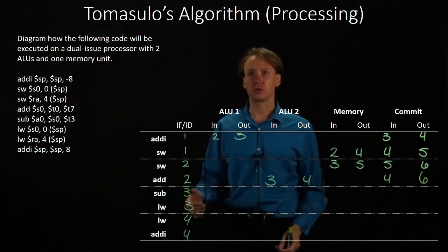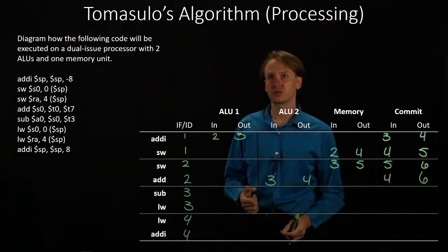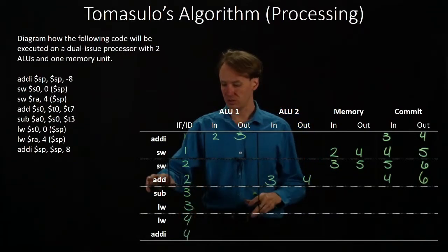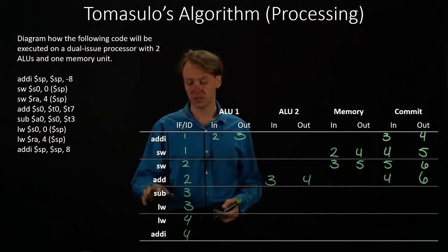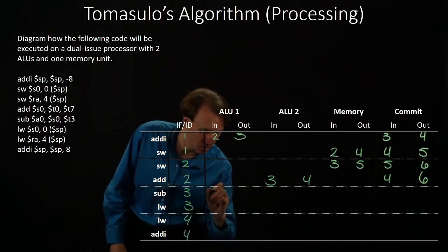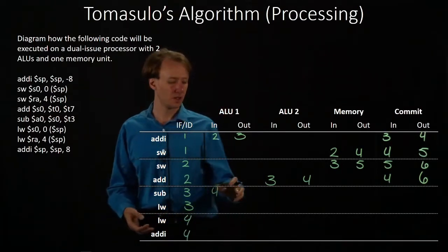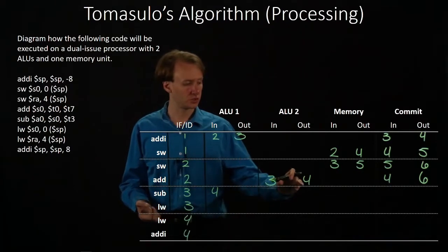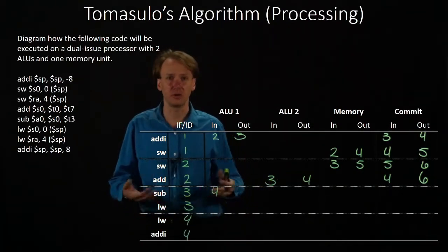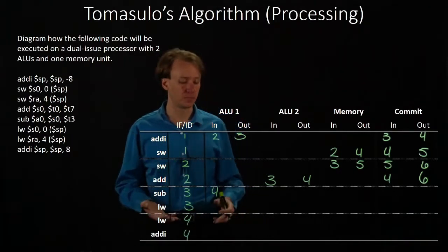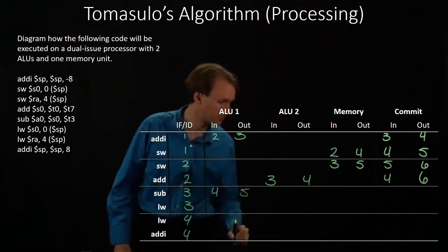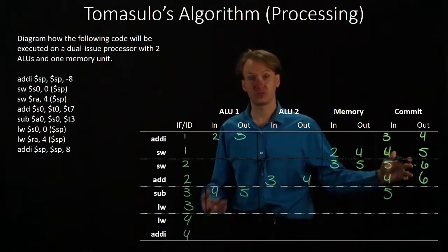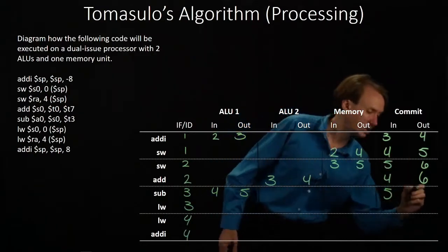Next we have a subtract instruction and a load word instruction. Our subtract instruction depends on S0 and T3, and we just computed S0, so there is a dependency between these two instructions. We'll send the subtract instruction off to the first ALU, arriving there in cycle four when that ALU is empty. The results of S0 are computed in the same cycle the subtract instruction reaches the ALU, so it will actually have all of its parameters available immediately and can just run. It ends up at the commit unit, but can only be committed in cycle seven since we can only commit two instructions per cycle.